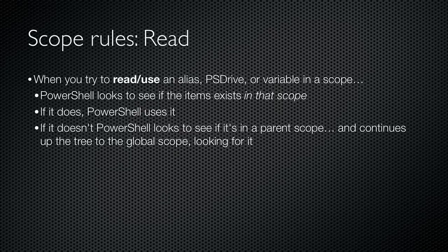When you try to read or access a variable, alias, PS drive, or PS snap-in, PowerShell looks for it in the current scope first. If it doesn't see it, it goes up to the scope's parent, then its parent, and so forth, up the tree until it reaches the global shell. This is why you can use aliases in your scripts. Although the aliases might not be defined in your script, PowerShell automatically searches up the scope tree until it reaches the global scope, which is where it finds all the built-in aliases.